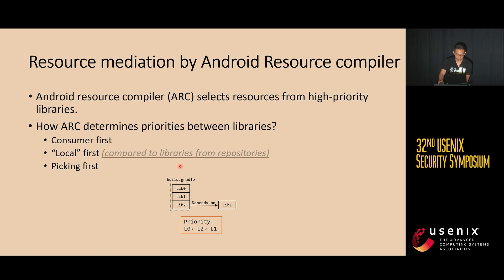The picking-first rule means that in the Android dependencies list, libraries listed earlier will have higher priority. Here is a simple example of the priority rules. We have library 0, 1, and 2, and library 2 depends on library 1. Then the priority will be library 0, then library 2, then library 1.